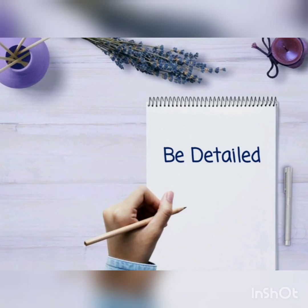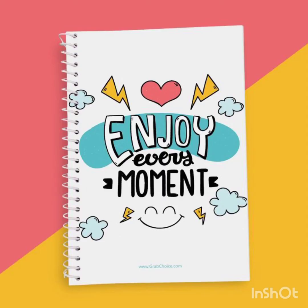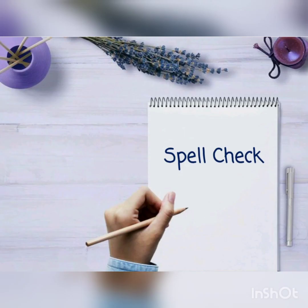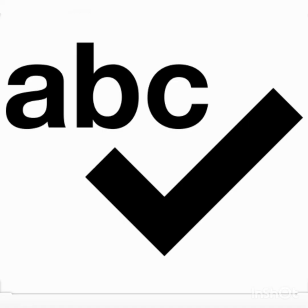The second point is to be detailed — think of it like a book. Try to pour out your thoughts and write in more detail rather than a brief description. The third tip is to spellcheck. Go through your entries to find poor grammar, punctuation, and spelling. Even the most diligent writer will make mistakes, so look out for any little errors in each and every entry, no matter how small.